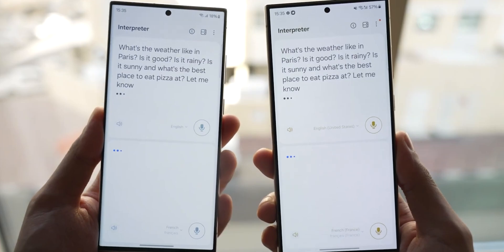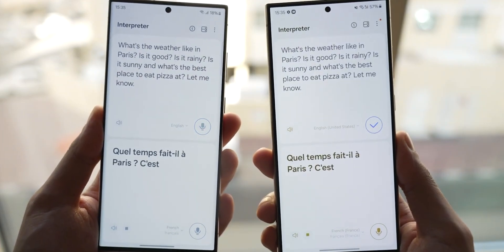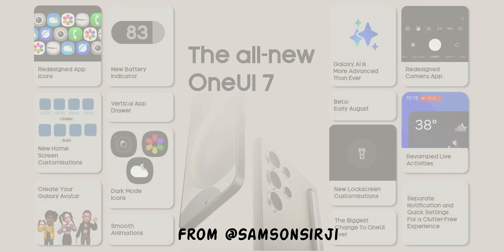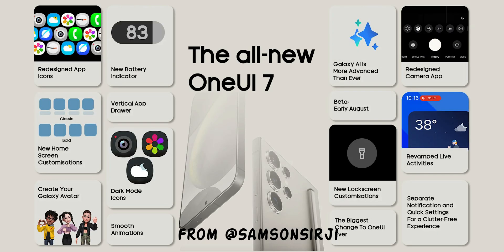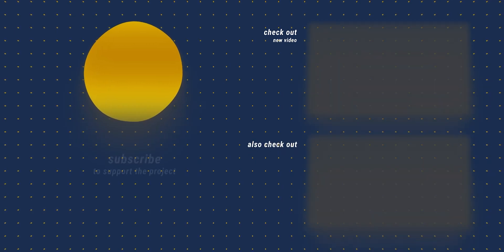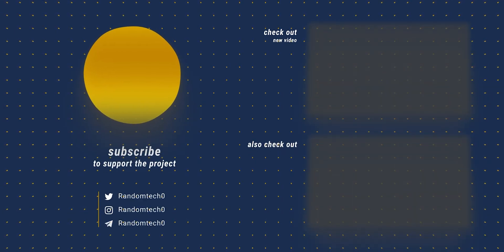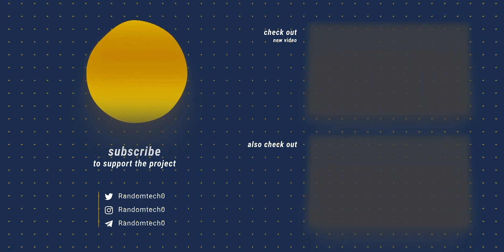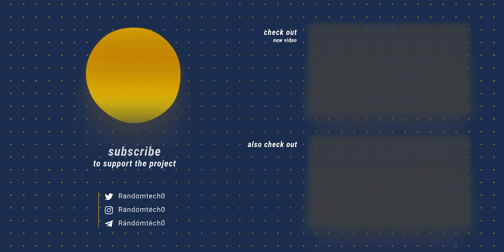That's our first look at One UI 7.0, including redesigned icons, a revamped camera UI, a new Quick Settings panel, and a stack-form recent apps screen. Share your thoughts in the comments below and subscribe if you're new here. Catch you later!